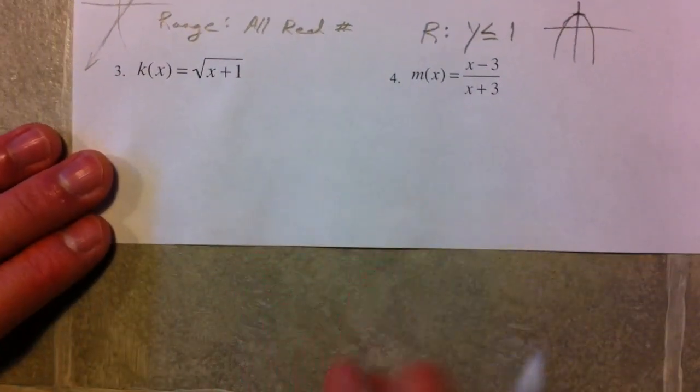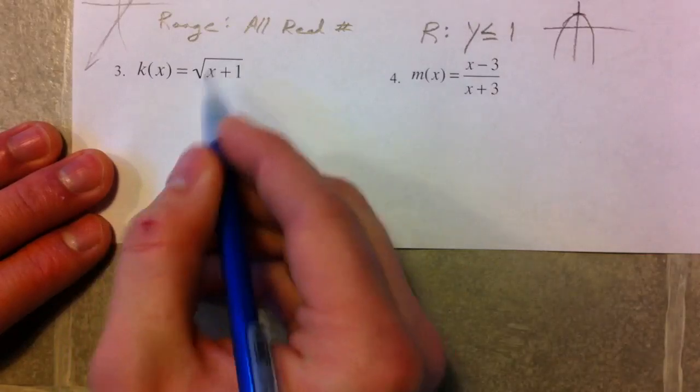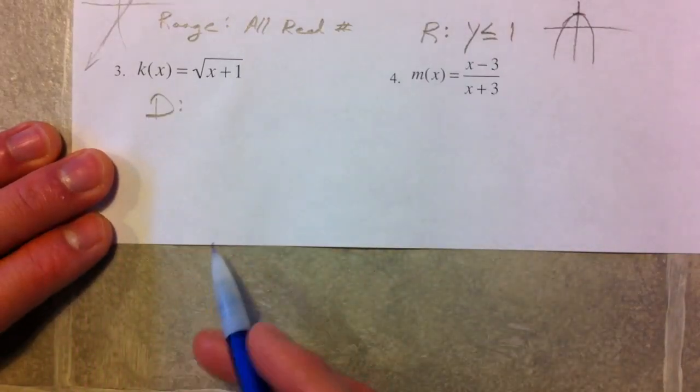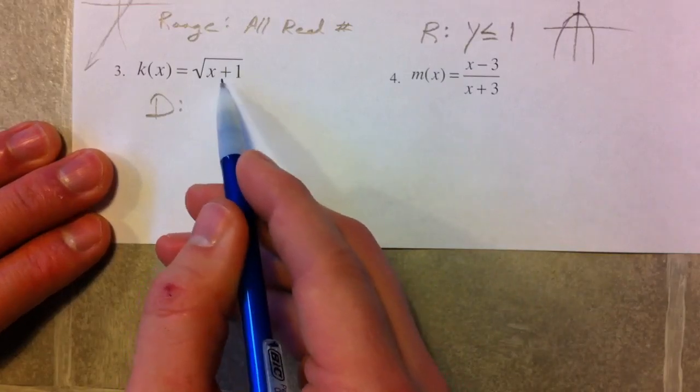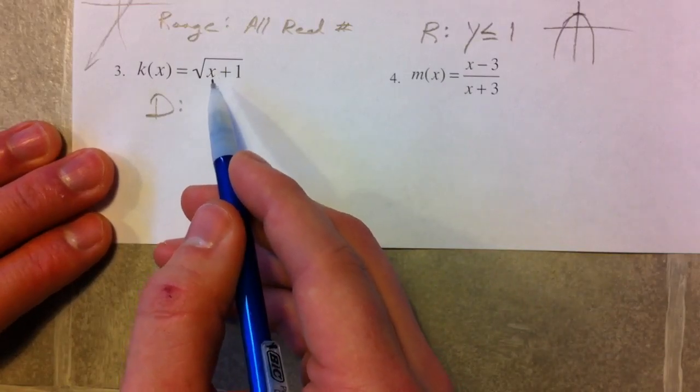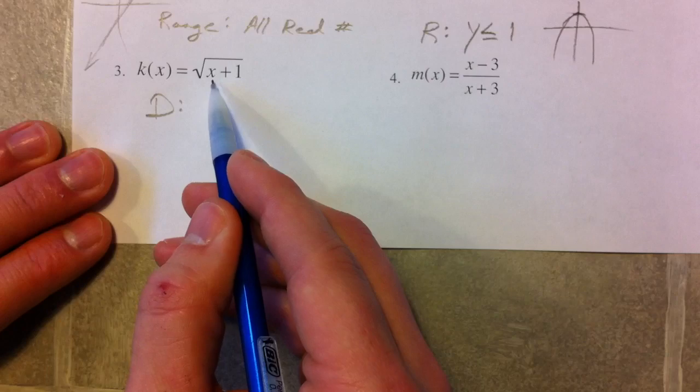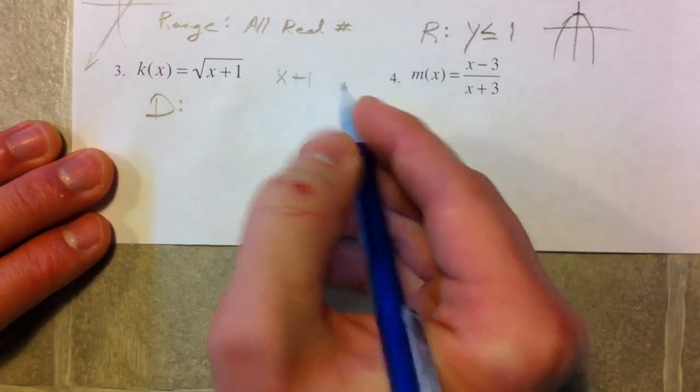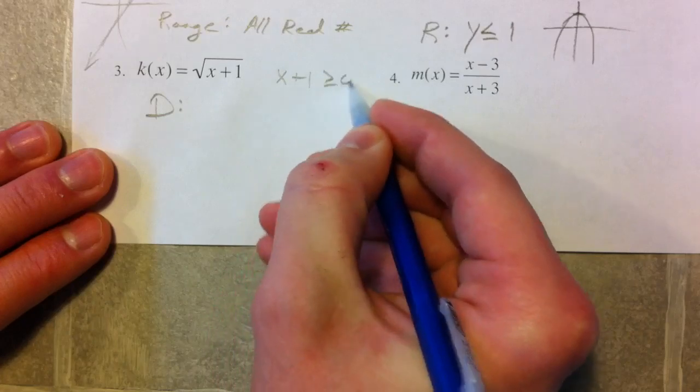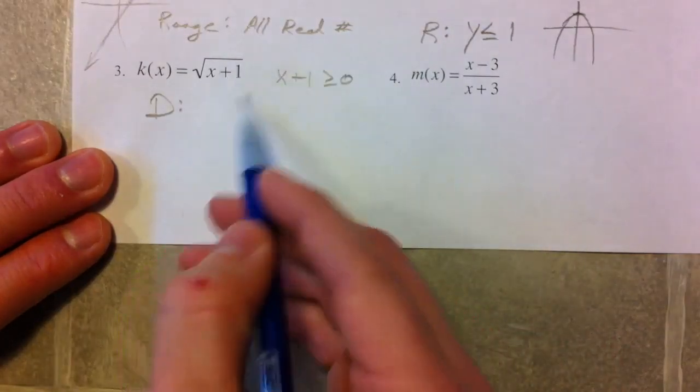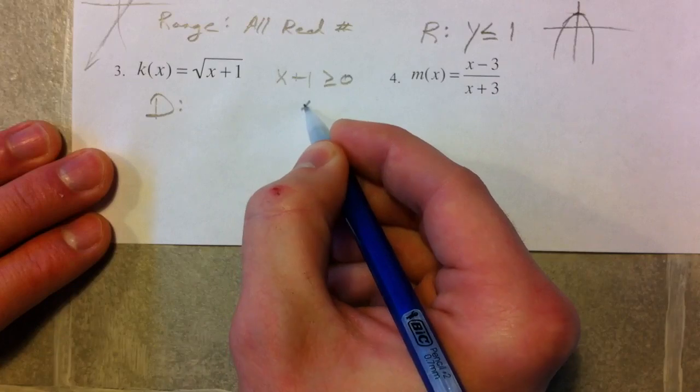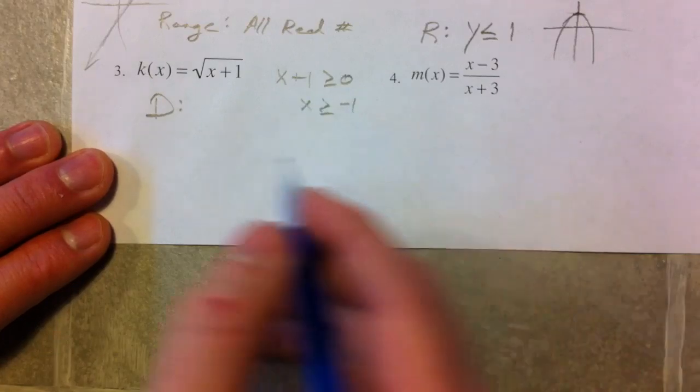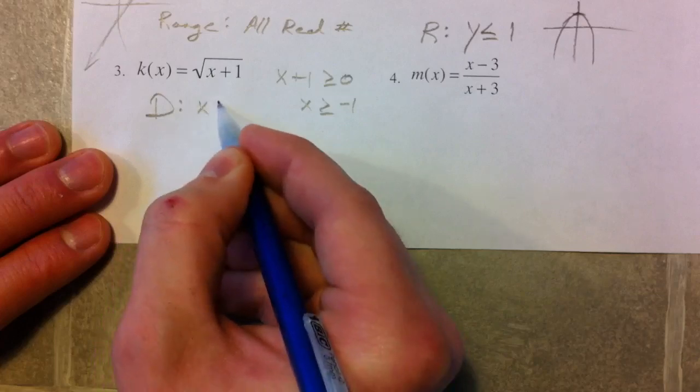These two are functions we're going to be dealing with a little bit later, but we want to remember the domain for a square root function. Square roots were restricted a little bit because, at least on the real number line, we can't take the square roots of negatives. And so x plus 1 has to be greater than or equal to 0. What's underneath the square root? And so if you solve that, x has to be greater than or equal to negative 1, and that's our domain.